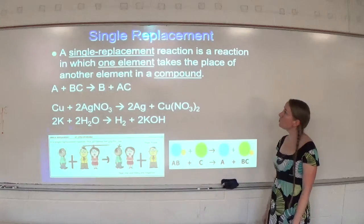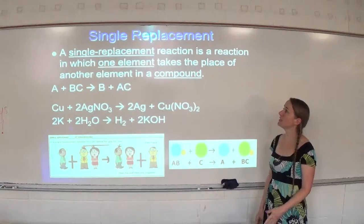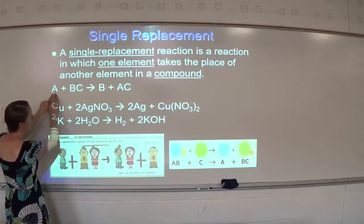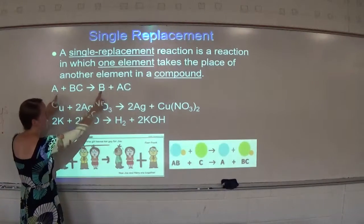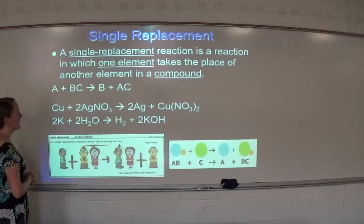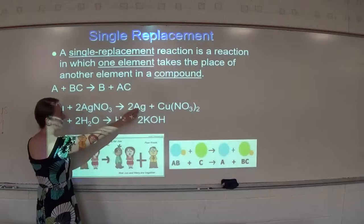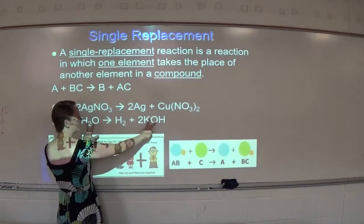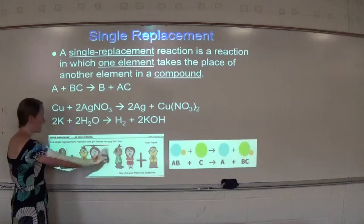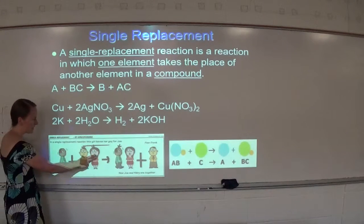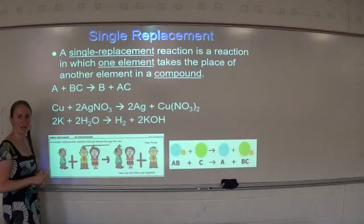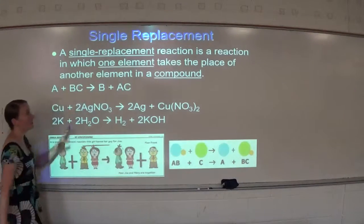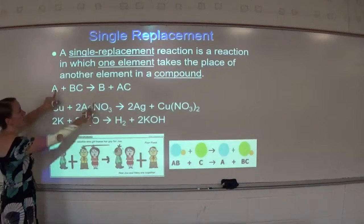Next is single replacement. A single replacement reaction is one in which one element takes the place of another element in a compound. Single replacement means there's something single on both sides. See how A is by itself on one side and B is by itself on the other, while the other two are paired up. For example, here copper is by itself on one side and silver is by itself on the other. Or potassium is by itself and hydrogen is by itself — the other two are paired up. Something is alone on both sides.